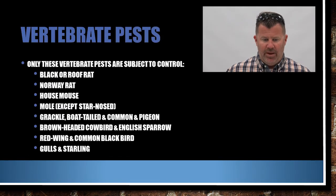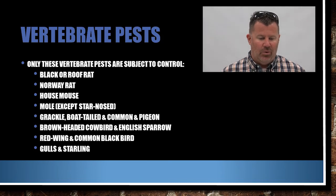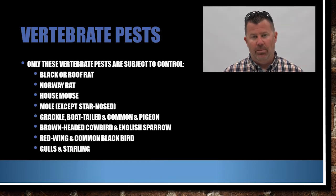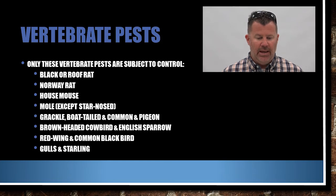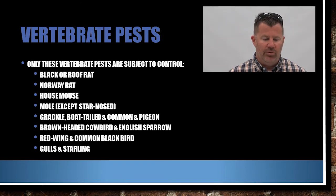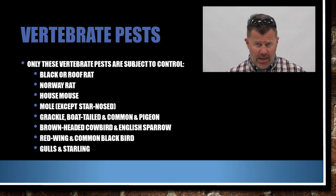Vertebrate pests subject to control with pesticides include: black or roof rat, Norway rat, house mouse, mole (except the star-nosed mole), grackle (boat-tailed and common), pigeons, brown-headed cowbird, English sparrow, red-winged and common blackbird, gulls, and starlings.